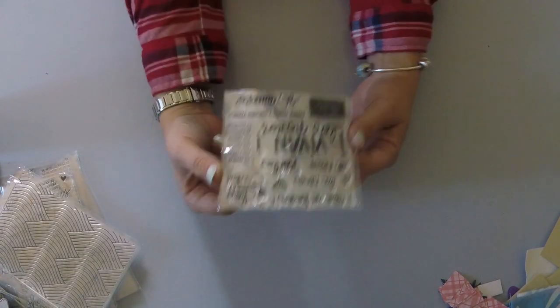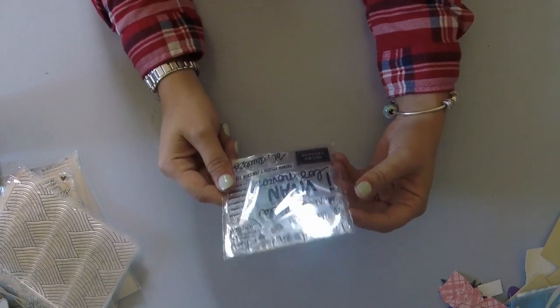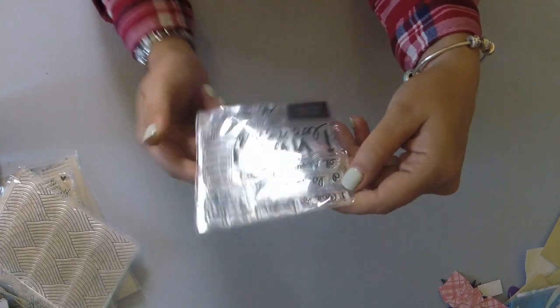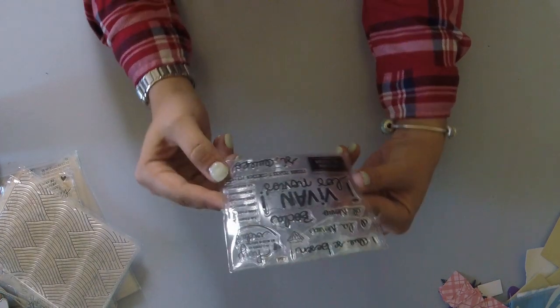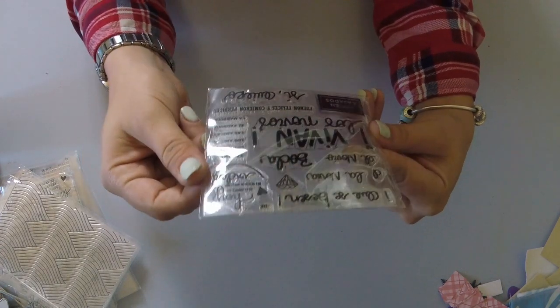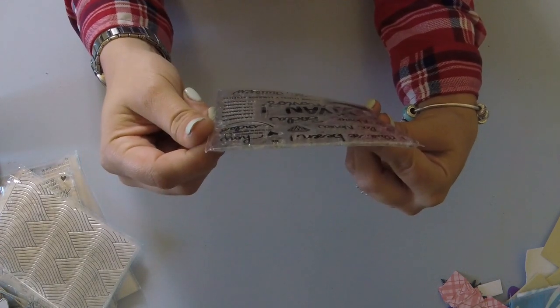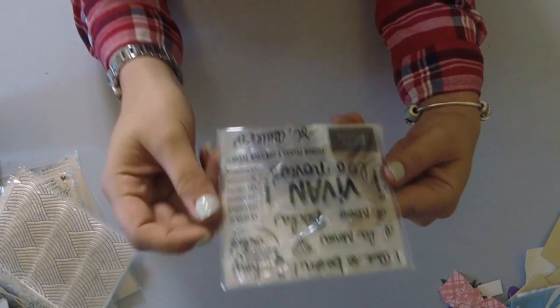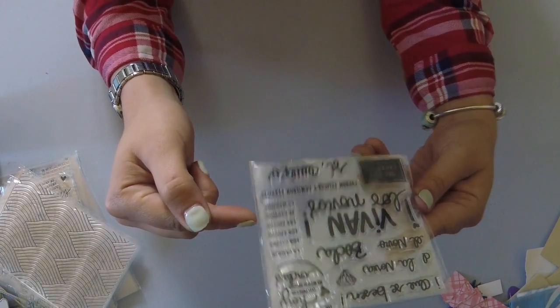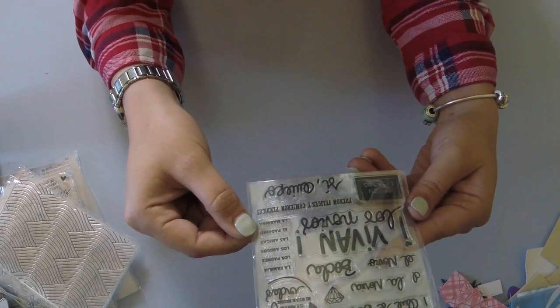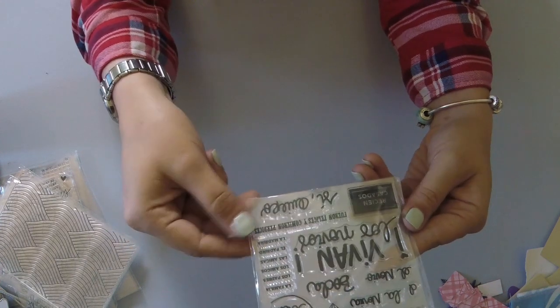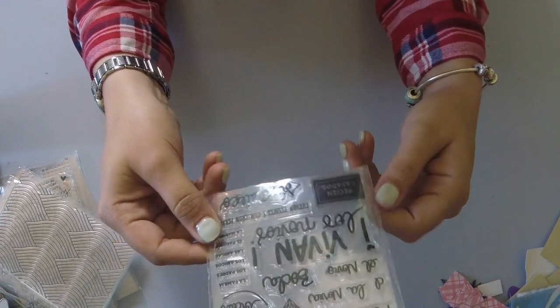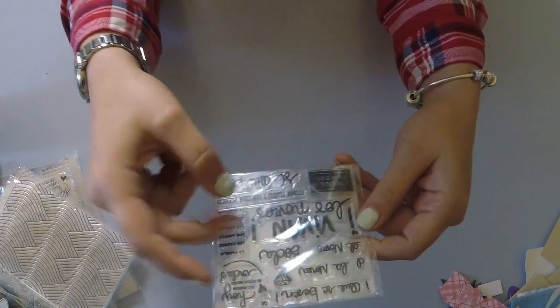And then the last stamp set I got was another like wedding set. This one's in Spanish. It says que se besan, la novia, el novio. Vivan los novios. Hoy es el primer día de nuestra, or del resto de nuestras vidas. La familia, los padres, los amigos, las amigas, el padrino, la madrina, los felices y comer en perdizis. Si quiero recién casados. So just all kinds of different things having to do with weddings right there.